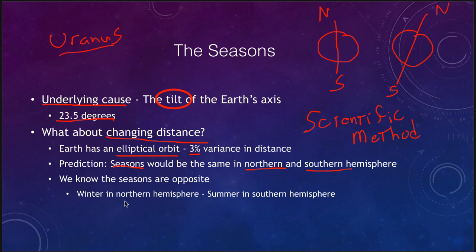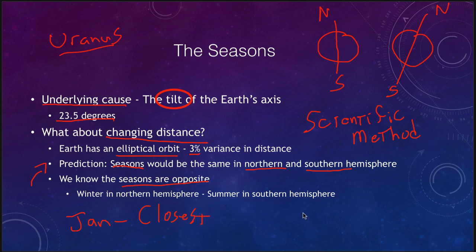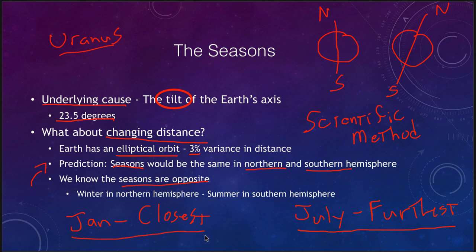We know that this is not correct. The seasons are opposite: when it is summer in the north, it is winter in the south, and the other way around. Furthermore, in January we are closest to the sun, and in July we are furthest from the sun. So if you live in the northern hemisphere, that definitely does not explain the seasons, because we are further away in July when it's hotter, and closer to the sun in January when it is colder.